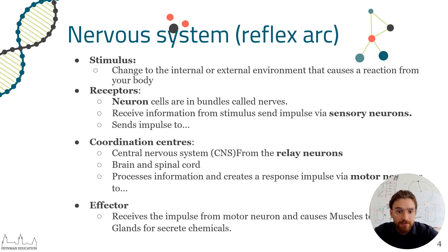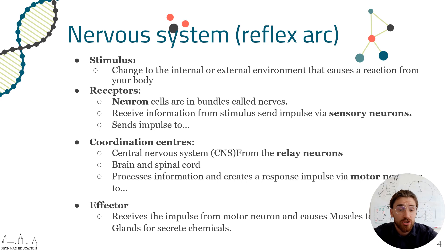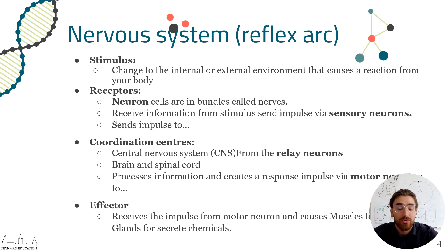We call it the reflex arc. The reflex arc is mainly made up of neurons — neurons are the cells adapted and specialized to send signals and impulses. There are three different types. Initially there is the stimulus, which is the change in the external or internal environment. A lot of the times they use the example of touching a flame, but this could also be a change in sugar levels within your blood. These stimuli are picked up by receptors, which are linked to a sensory neuron. Sensory neurons send an impulse.